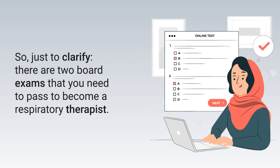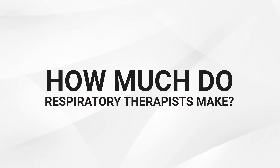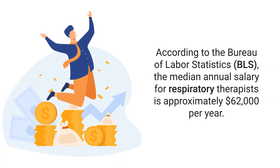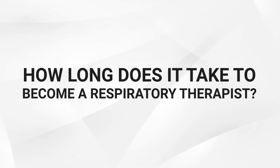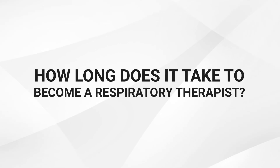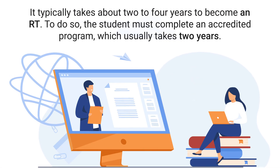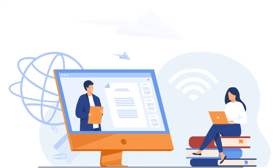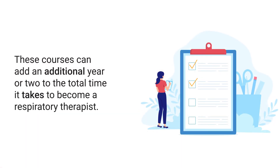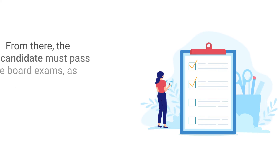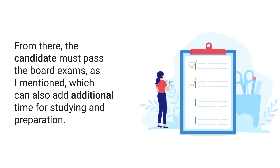According to the Bureau of Labor Statistics, the median annual salary for respiratory therapists is approximately $62,000 per year. However, this number will vary depending on factors such as experience, education, and location. It typically takes about two to four years to become an RT. Students must complete an accredited two-year program, but most programs require prerequisite courses beforehand, which can add an additional one to two years. Passing the board exams can also add additional time for studying and preparation.